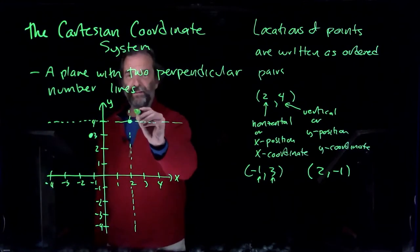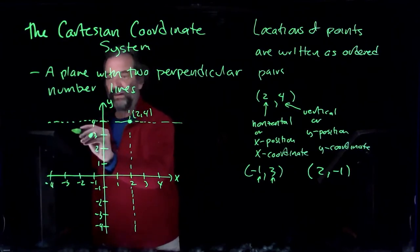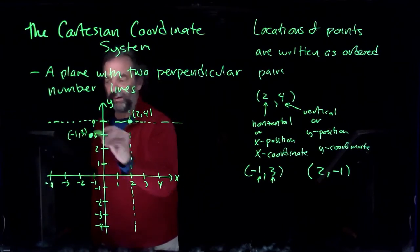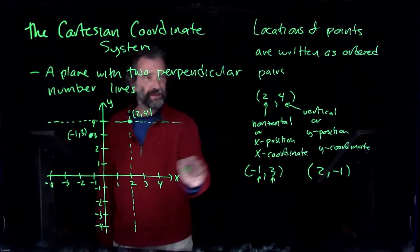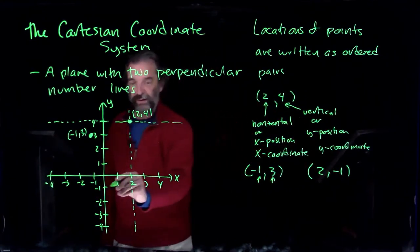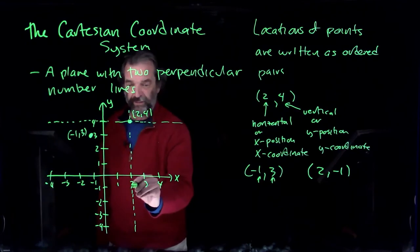We can also label them. Sometimes you do that: two, four; minus one, three, like that. And then two, minus one—the same two for x, but now y is minus one. So two for x and minus one for y.